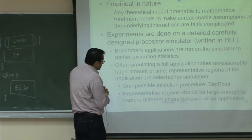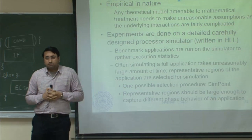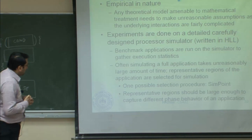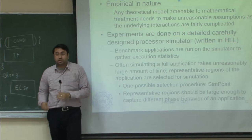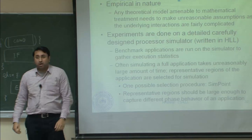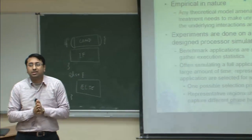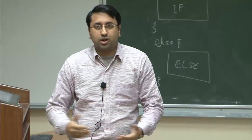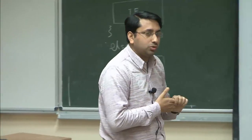What people do is find representative regions of applications and select only those for simulation. How do you pick representative regions? For example: try to look at the 10% of code that runs for maximum time. But if you run on small data, everything fits in cache or memory and you cannot model cache misses or page faults — so you finish the simulation in 2 minutes but the results are useless.